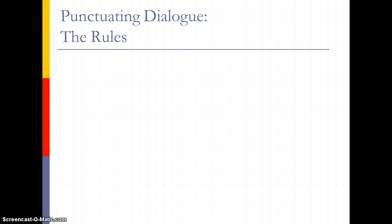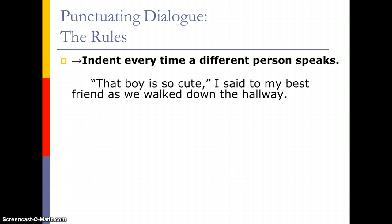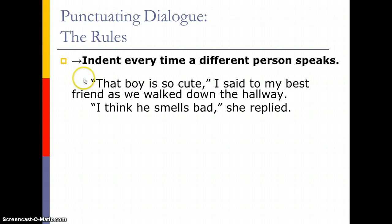Now let's talk about the rules for punctuating dialogue. These are important because we want to make sure that we are writing our short stories correctly. First, we need to indent every time a different person speaks. So if you're having a conversation between two or three characters, each time you change speakers, you're going to need a new paragraph — you're going to need to indent. For instance: 'That boy is so cute,' I said to my best friend as we walked down the hallway. 'I think he smells bad,' she replied. Each time we have changed speakers, we have indented.